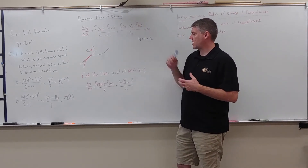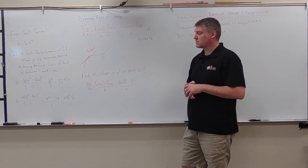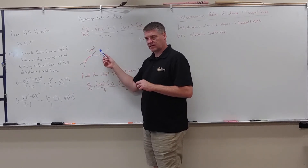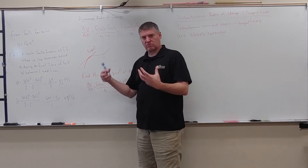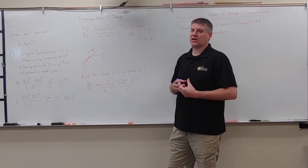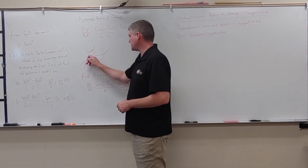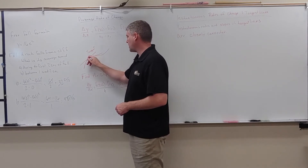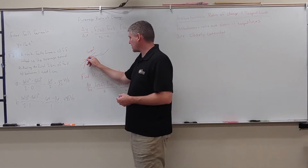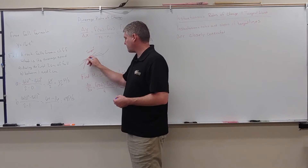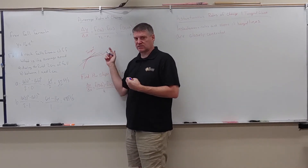h cannot be 0 because you can't divide by 0, but we're going to look at what happens as h gets close to 0. A tangent line is the line that intersects the graph at just that one point. When finding slope we need two points, so we look at how to get close to the slope of a tangent line using what we call a secant line. The secant line goes through two points, and as the difference between those two points gets smaller and smaller, the closer we get to the tangent line slope.